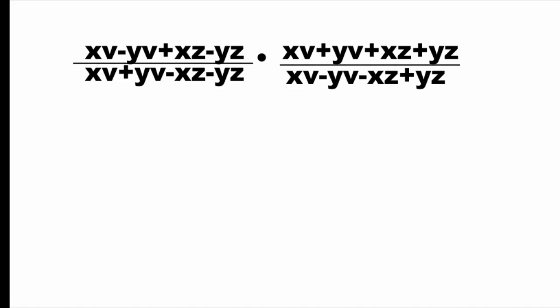You can group by two and factor v and z. Factor v and z in the first numerator as v times x minus y plus z times x minus y